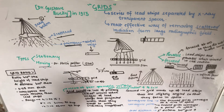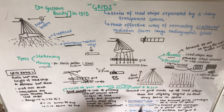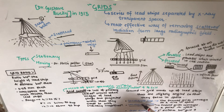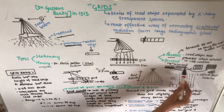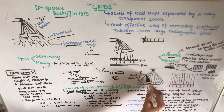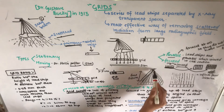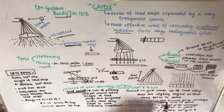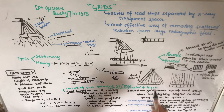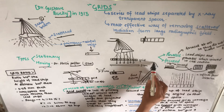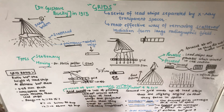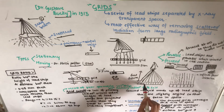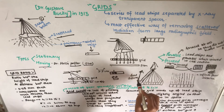There are three related terms: convergent line, convergent point, and focal distance. For linear focused grids, the lead strips converge at a line in space — this is the convergent line. For cross grids, the strips converge at a single point in space — this is the convergent point. The focal distance is the perpendicular distance between the grid and the focal spot or convergent line.